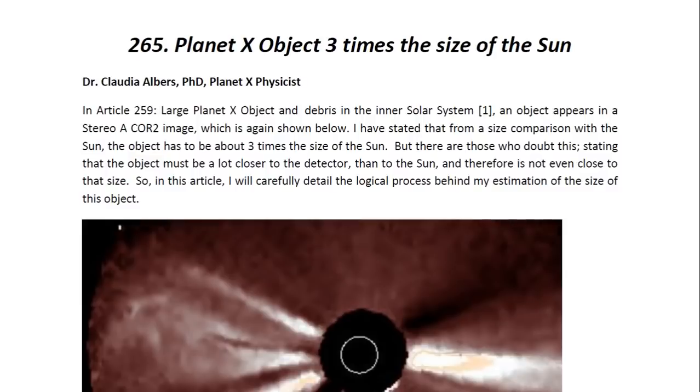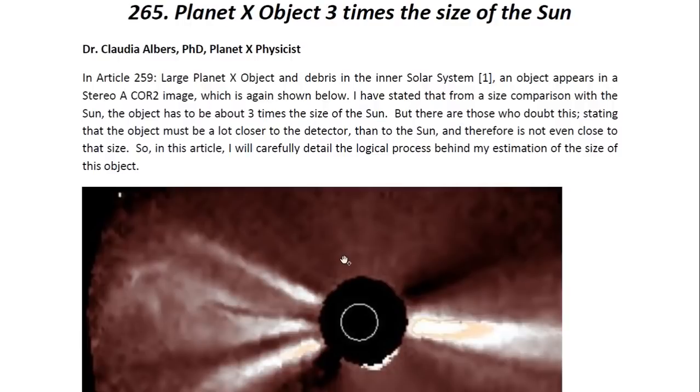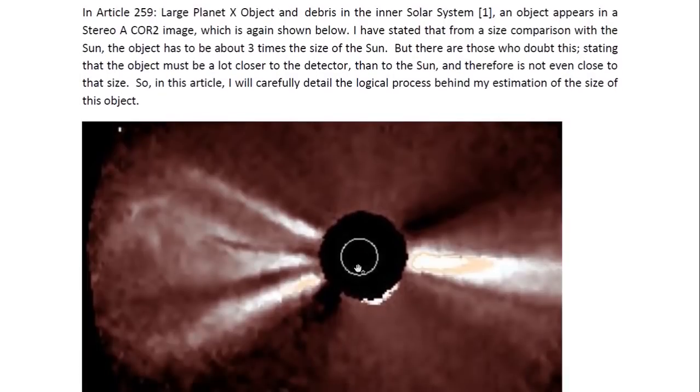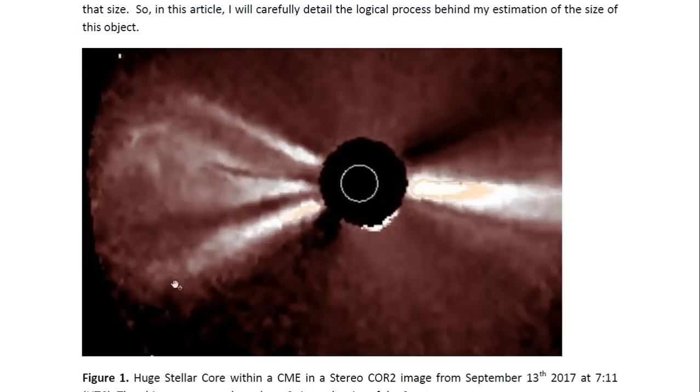In article 259 entitled Large Planet X object and debris in the inner solar system, an object appears in a STEREO COR2 image which is again shown here. I have stated that from a size comparison with the Sun, the object has to be about three times the size of the Sun. But there are those who doubt this, stating that the object must be a lot closer to the detector than to the Sun and therefore is not even close to that size. So in this article I'll carefully detail the logical process behind my estimation of the size of this object.